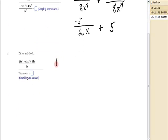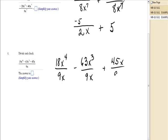Last one. So, 18x to the 4th over 9x minus 63x to the 3rd over 9x plus 45x over 9x. So, 18 divided by 9 is 2, x to the 4 minus 1 is 3, minus 63 divided by 9 is 7, x to the 2nd plus 5. Because 9 goes into 45 five times, those x's cancel out.